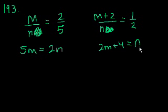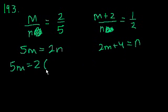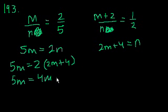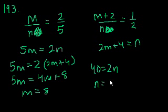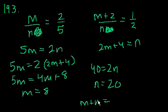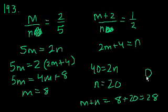Substituting n = 2m + 4 into 5m = 2n: 5m = 4m + 8, so m = 8. Then 5(8) = 2n gives n = 20. The total number of students is m + n = 8 + 20 = 28 students. That is choice D.